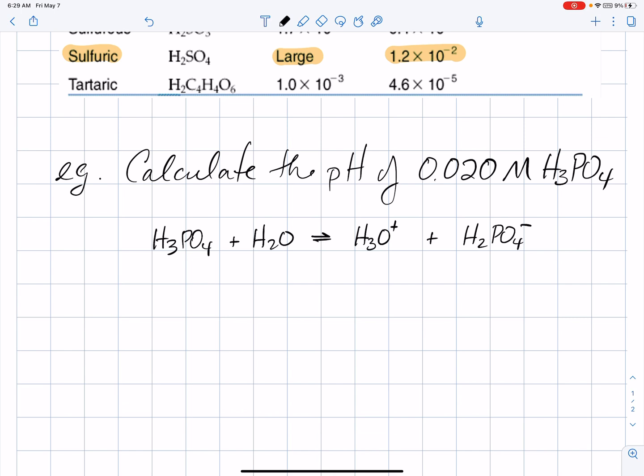Now, we're going to set up an ice table. The initial concentration of the acid is 0.020 molar. Water is a liquid, so in our ice table, we're going to ignore the water. It's dissolved in water, and we'll assume 25 degrees Celsius.